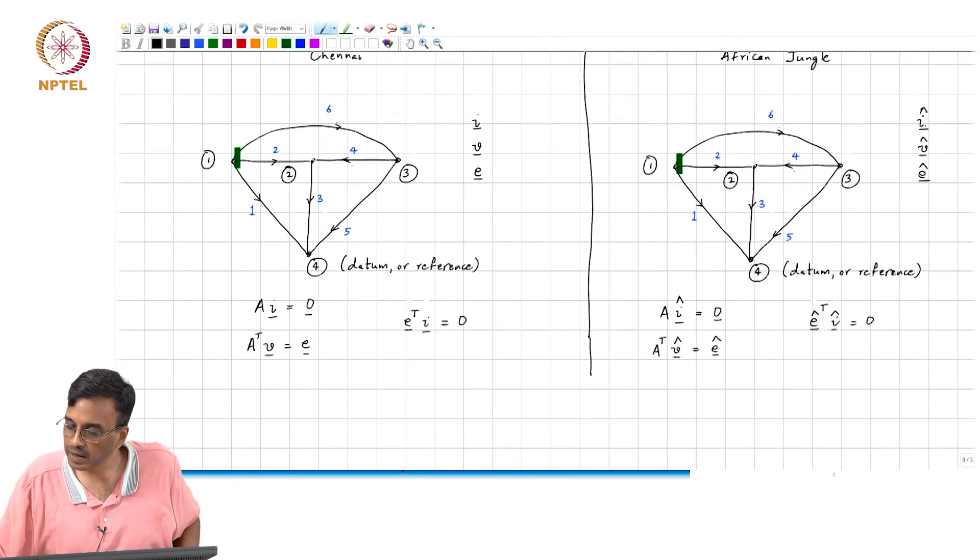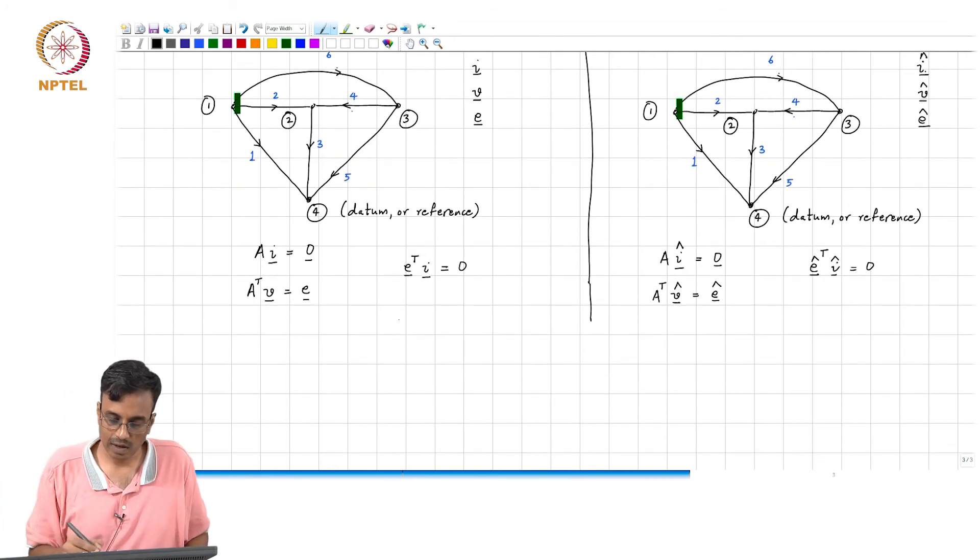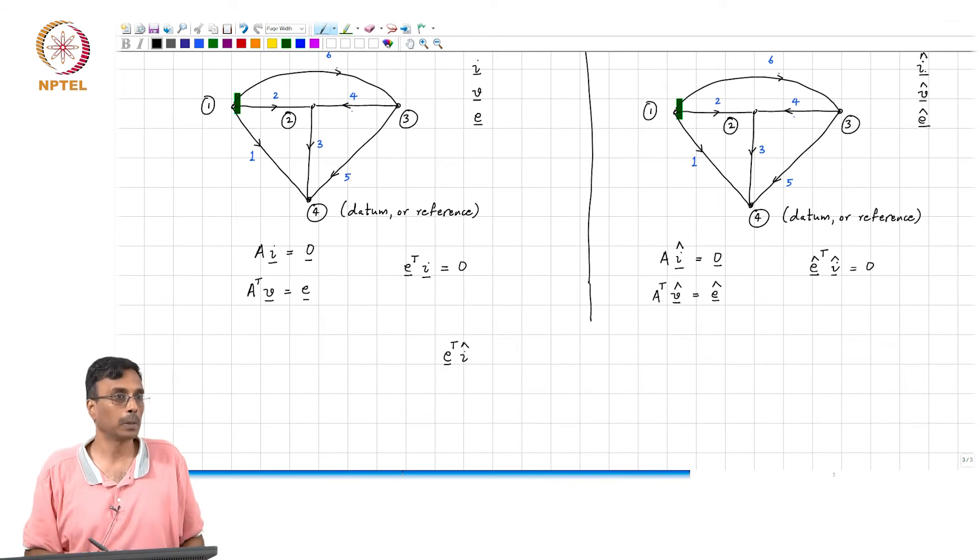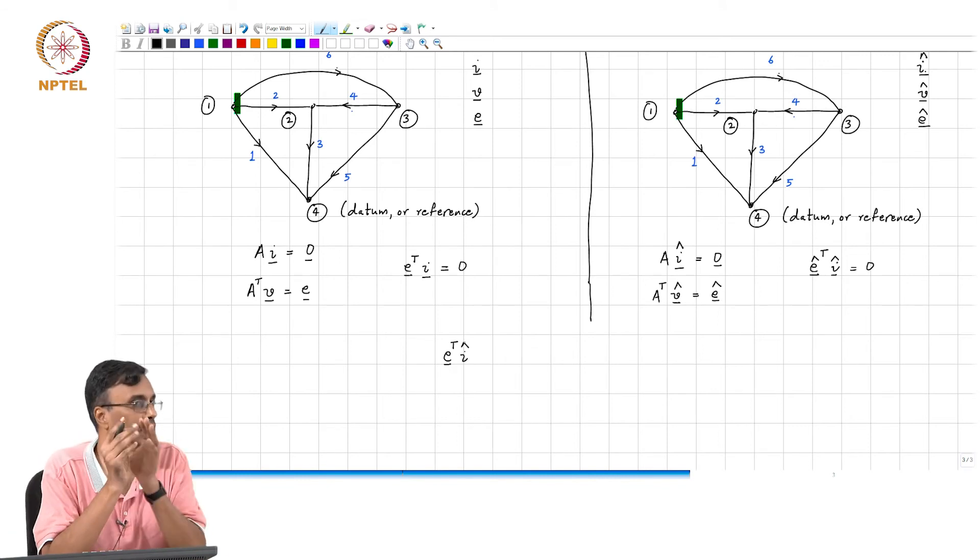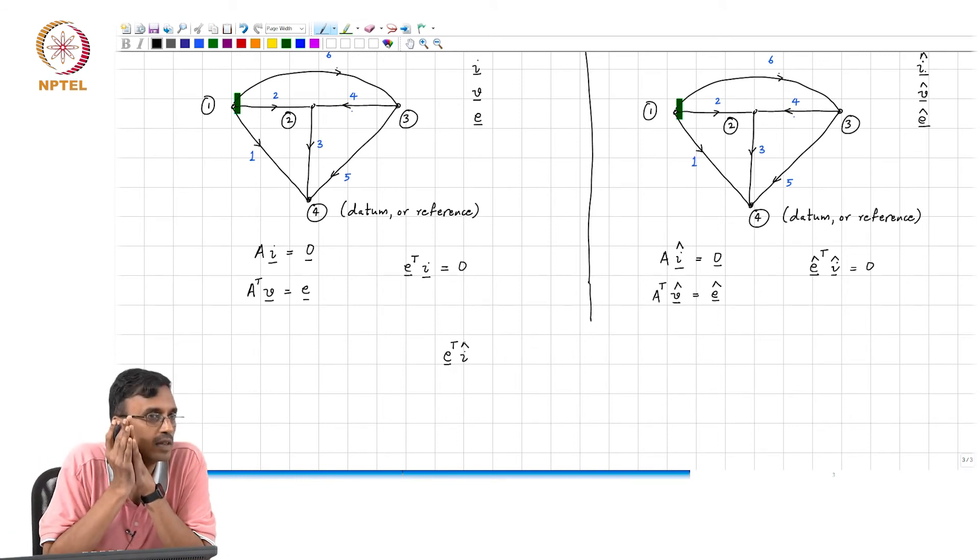But let me show you an interesting thing, and that is let us try and form the product E transpose times I hat. And what physical interpretation, if any, can we give to this quantity? What are the dimensions of E transpose times I hat?